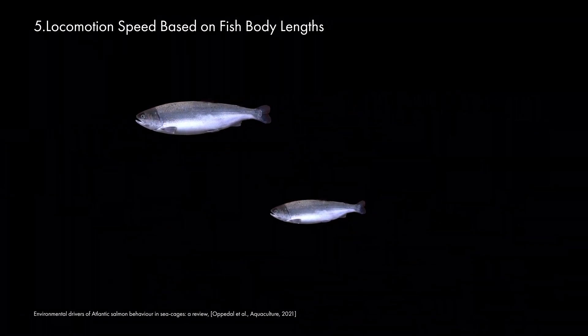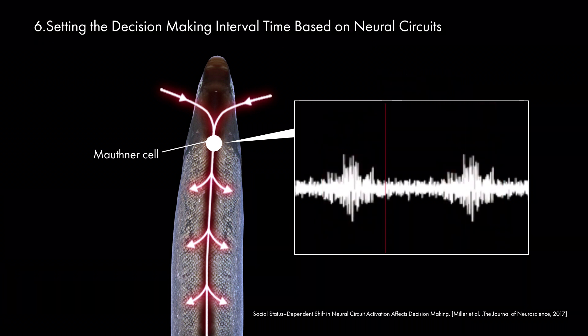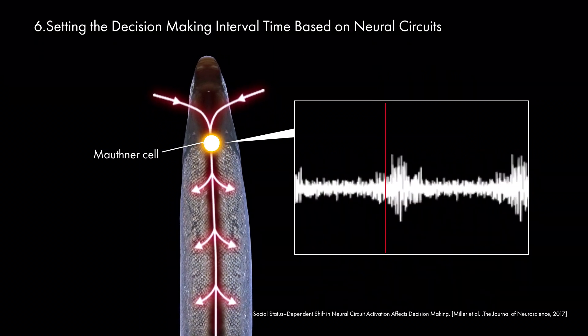The larger the fish is, the faster it can swim. We set the per fish simulation update frequency to 200 milliseconds, based on the decision-making interval time proposed by Miller.